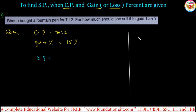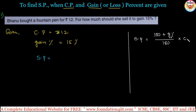When it is a gain, selling price equals (100 + gain percentage) divided by 100, into cost price. This is the formula when gain percentage is given: SP = (100 + gain%) / 100 × CP. Similarly, when it is a loss, selling price equals (100 − loss percentage) divided by 100, into cost price: SP = (100 − loss%) / 100 × CP.